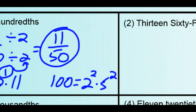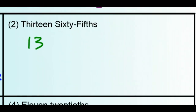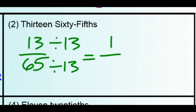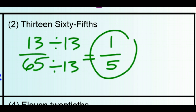For number 2, we have 13 over 65. It may not be immediately obvious that these two integers share anything, but it turns out they're both divisible by 13, which gives you 1 out of 5 as the simplest form. 65 is simply 5 times 13.